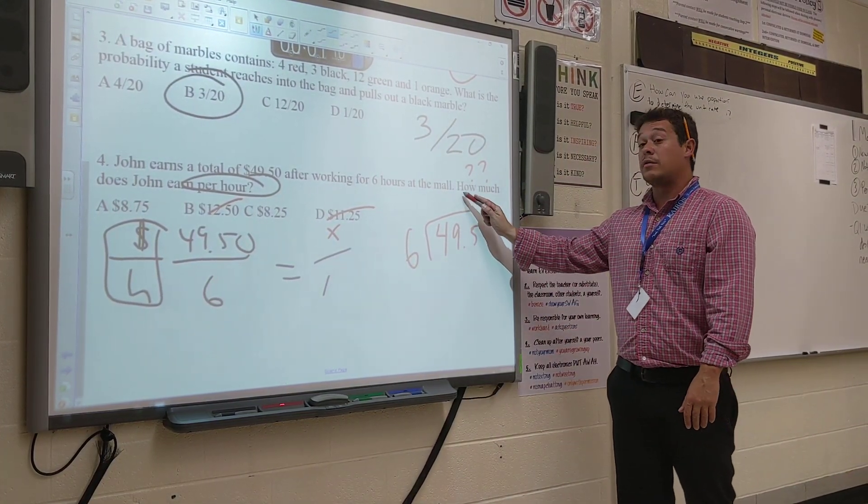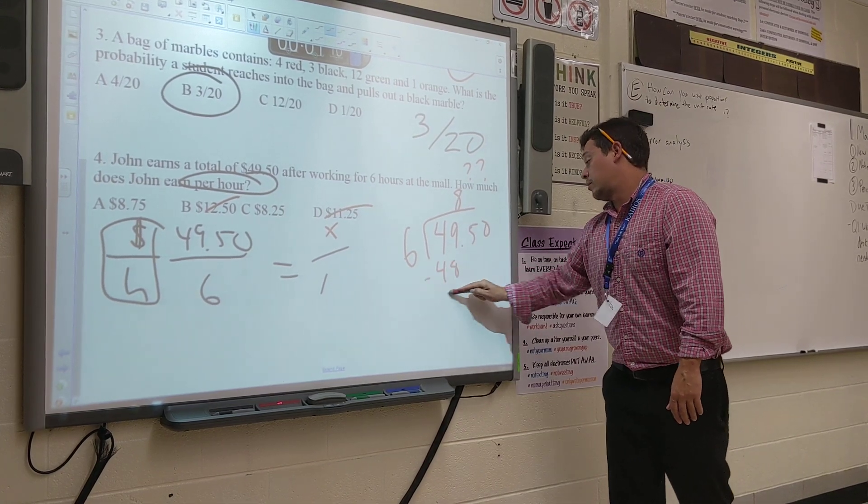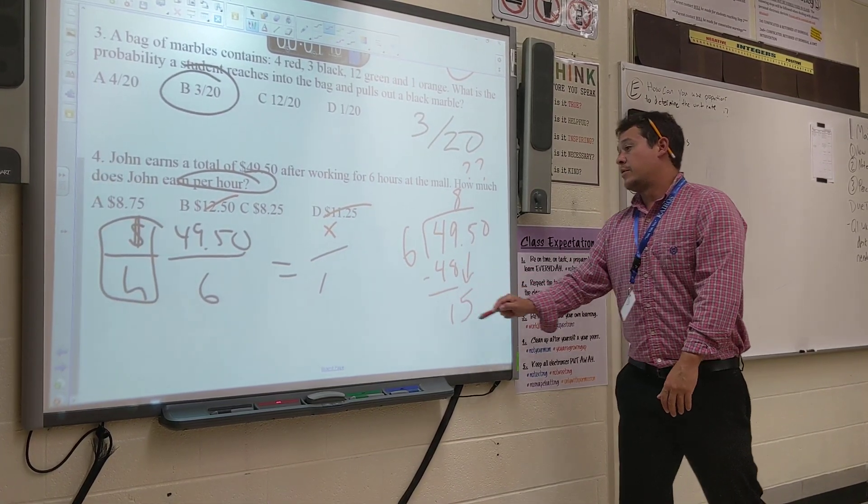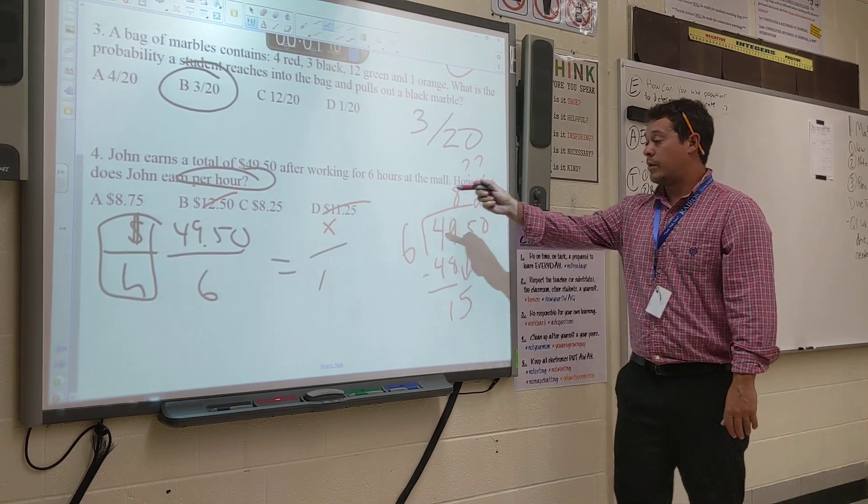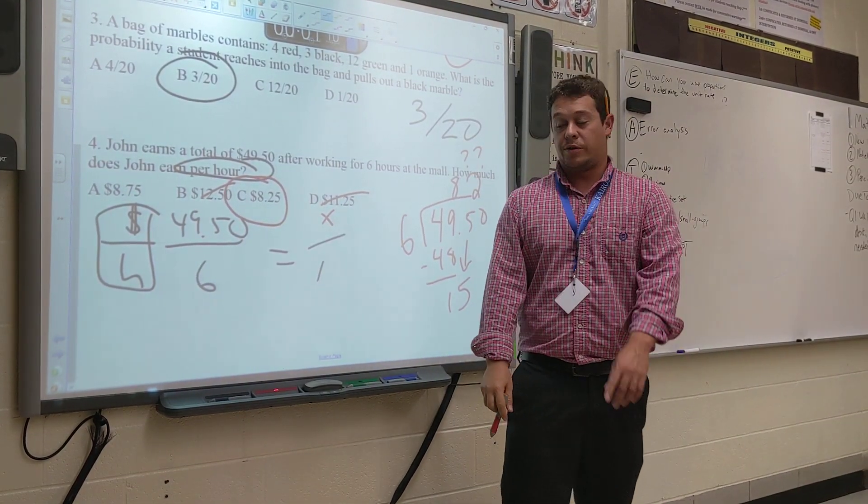6 can go into 48 eight times. That's 48. Bring the 5 down. 6 can go into 15 twice. There you are. Thumbs up if you got C for number 4. Pause it.